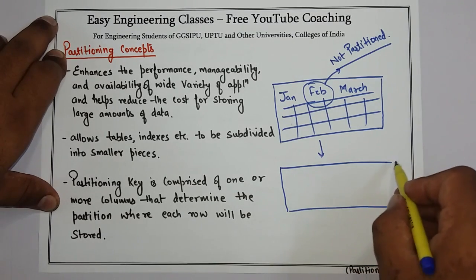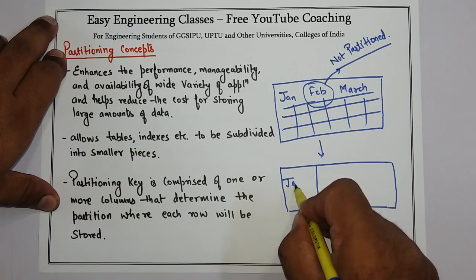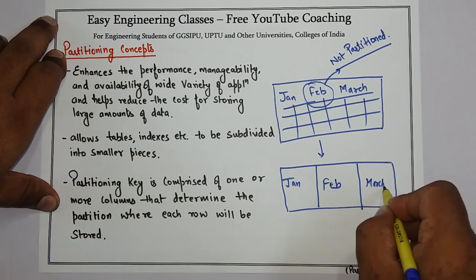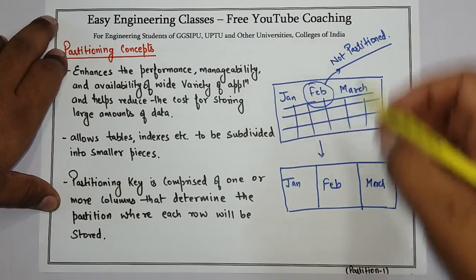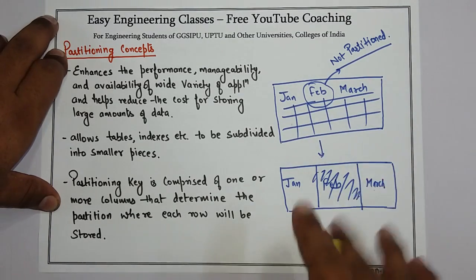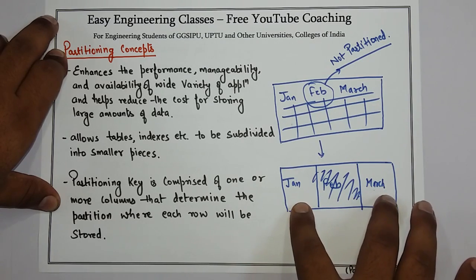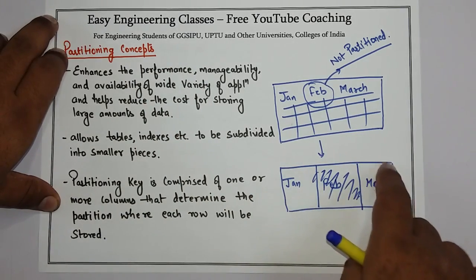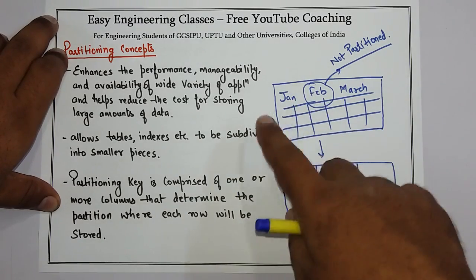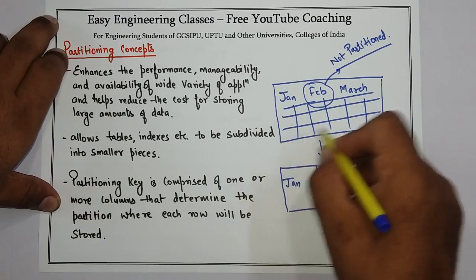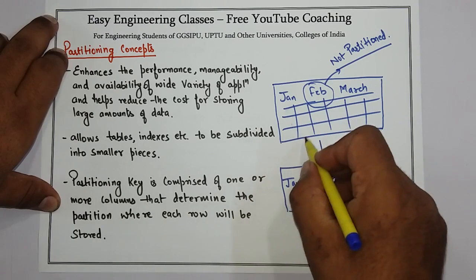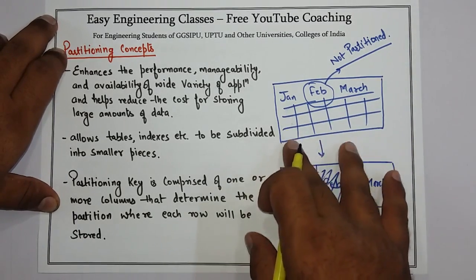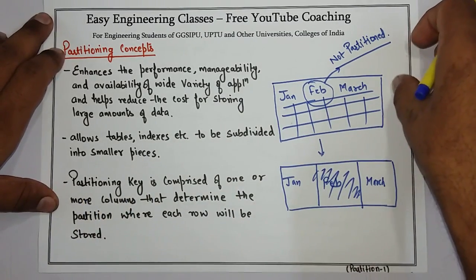But if this data is partitioned, it may look like this: one partition for January, another partition for February, and then the partition for March. So now if I have to see records for February, I have to search only that particular partition and will not bother about the other two. This reduces cost, enhances performance, and makes data management much simpler compared to a non-partitioned database. The columns that tell where records are stored in memory are known as the partitioning key.